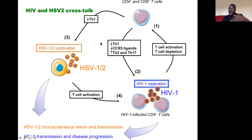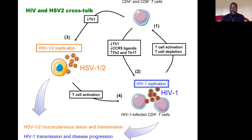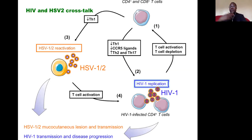The decrease in the TH1 response results in HSV-2 reactivation. HSV-2 is a chronic dormant infection residing in the nerves; when the immune response drops, it reactivates. That reactivation leads to more T cell activation, attracting more CD4+ and CD8+ T cells, which allows more HIV replication — a cycle that continues. This is how HIV and HSV-2 talk to each other, which is why many HIV-positive patients experience HSV-2 reactivation.